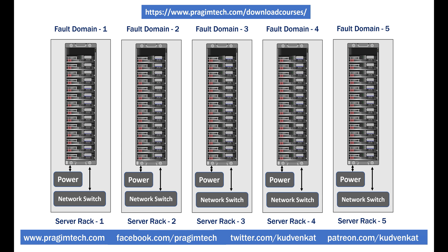Let's say in each rack we have 10 servers. When the power supply or network switch in that rack fails, only the 10 servers in that rack are affected. The rest of the nine racks — that is, the other 90 servers — are unaffected. So by grouping servers in a data center into multiple racks, that is multiple fault domains, we are able to eliminate a single point of failure.